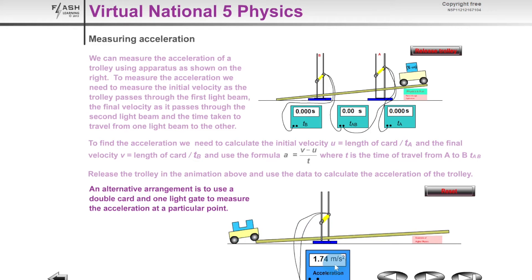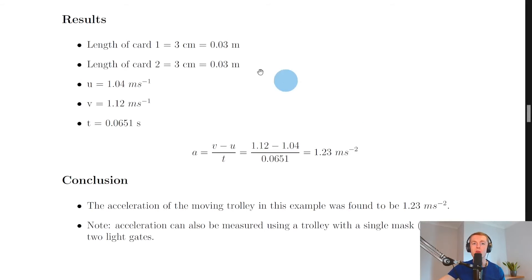Going back to the notes now, you'll see we have some sample results from when I did this in the physics classroom. So let's say our length of the first card was three centimeters, which is the same as 0.03 meters, and we said that's usually going to be the same as the length of the second card as well. They're going to be identical widths, so the length of the second card is again 0.03 meters.